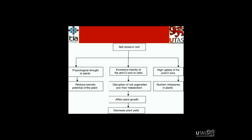In salt stress, we can talk about three subjects. The first is physiological drought in plants — salt stress causes physiological drought which reduces the osmotic potential of the plant. The second is excessive toxicity of sodium and chloride ions to cells, which causes disruption of cell organelles and their metabolism, and it affects plant growth and decreases plant yield, which is the most important part for farmers. The third is high uptake of sodium and chloride ions, which causes nutrient imbalance in plants.